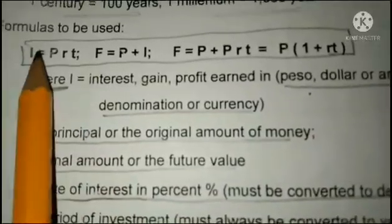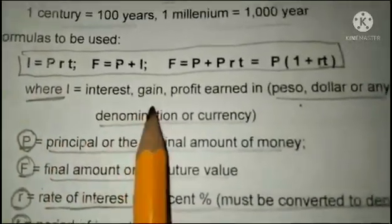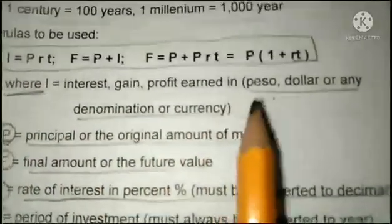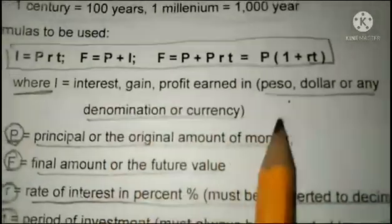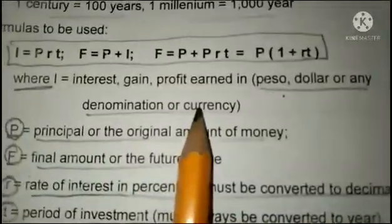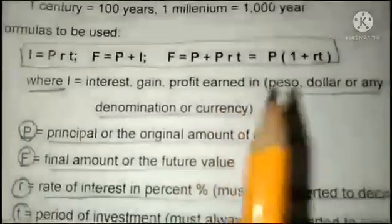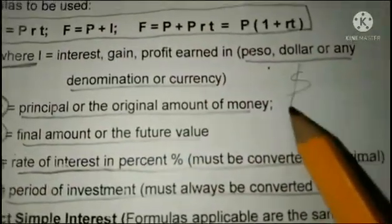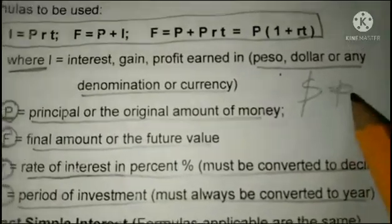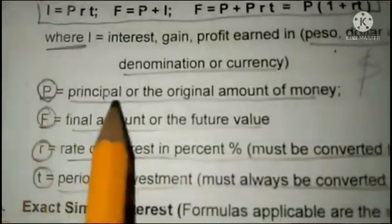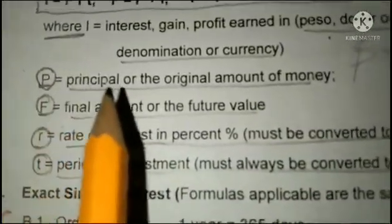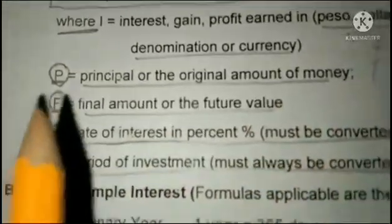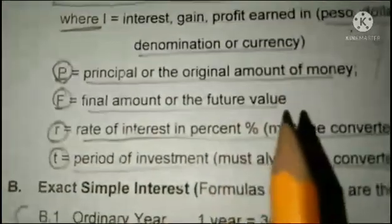Where I is interest, a gain or profit earned in pesos, dollars, or any denomination of currency. P is principal or the original amount of money. F is the final amount or the future value.